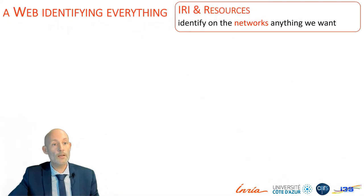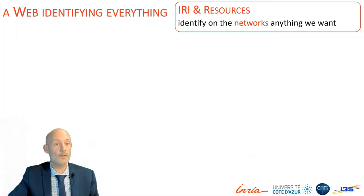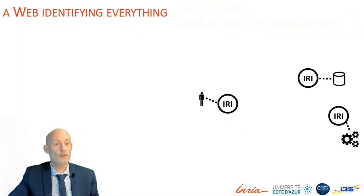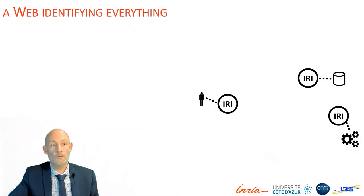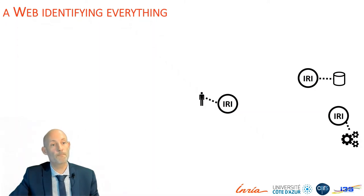With IRIs and the notion of the resource, the web allows us to identify on the network anything we want, and to do so in a uniform way. So you can identify a person, a database, a service, a protein, a policy, virtually anything, and everyone in our community is doing that.